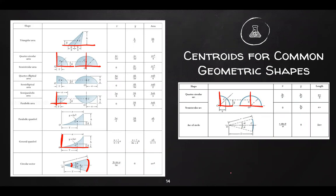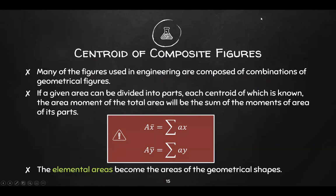We won't just find the centroid of a single shape — we'll find the centroid of composite areas. Many engineering figures are composed of combinations of geometric shapes. If a given area can be divided into parts whose centroids are known, the total area moment equals the sum of the moments of its parts — this is Varignon's theorem applied to areas: total area times x̄ equals summation of individual areas times x.